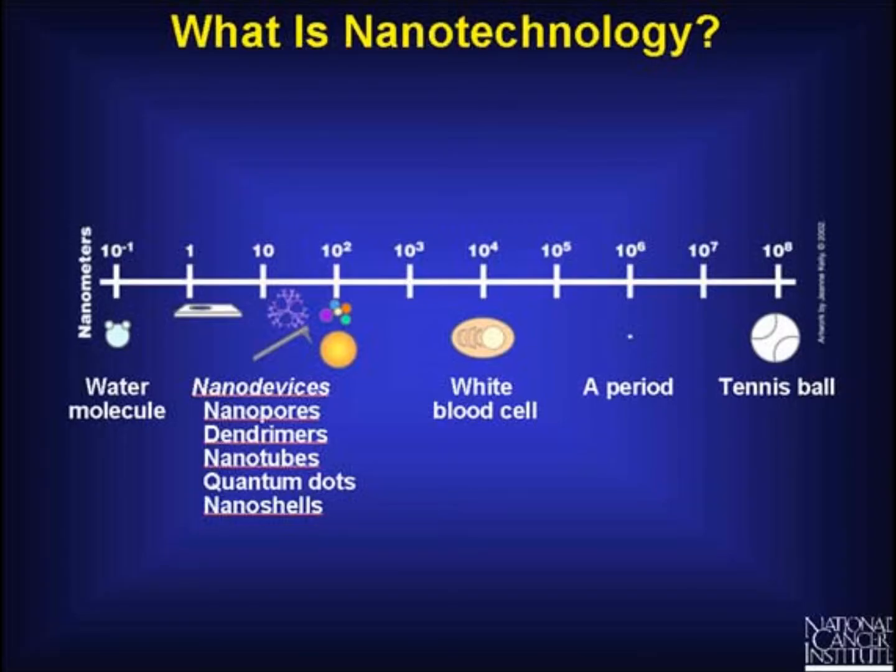Nanotechnology deals with anything that has at least one dimension best measured in nanometers — 3.5 gold atoms equal one nanometer. When objects are this small, they exhibit strange effects, and quantum mechanics best describes how they function.